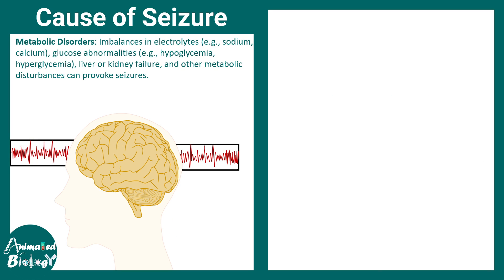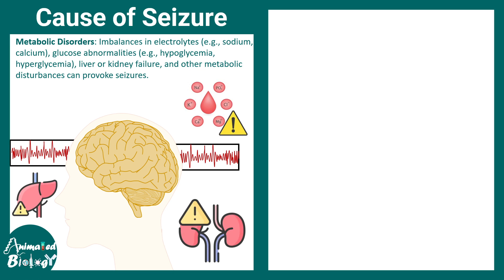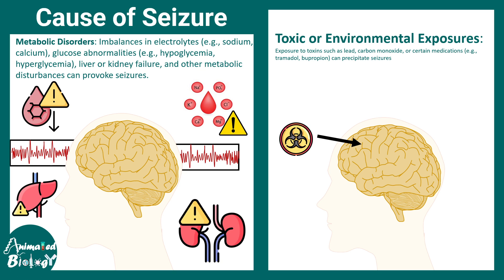There can also be metabolic imbalances such as dysregulation of sodium, potassium, and calcium blood levels, which are important for neuronal activity. This can arise due to heart or kidney failure. Additionally, exposure to harmful chemicals, toxic chemicals, heavy metals, carbon monoxide, or pesticides can also trigger a seizure. Environmental toxicants are a strong trigger for seizures, although the exact mechanism is not fully understood.